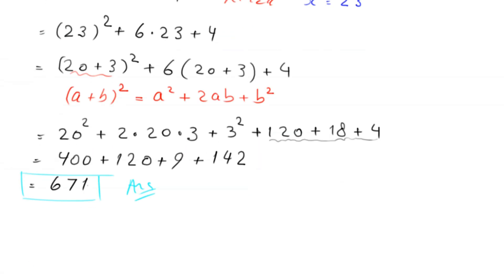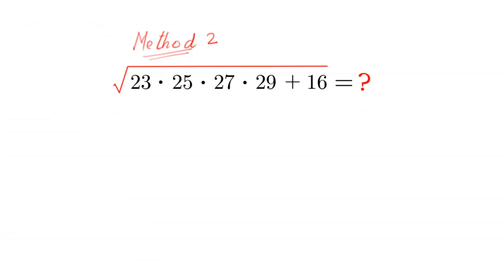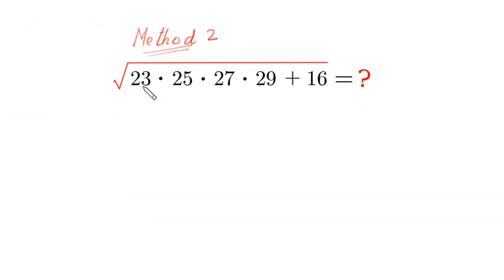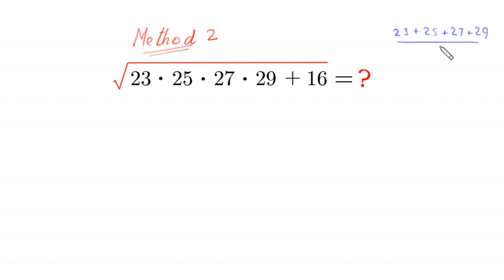Now let us solve this problem by Method 2. The average of the four numbers 23, 25, 27, 29 is (23+25+27+29)/4 = 104/4, which equals 26.